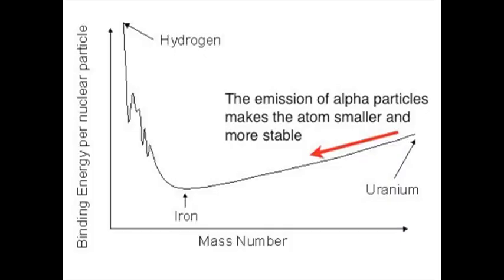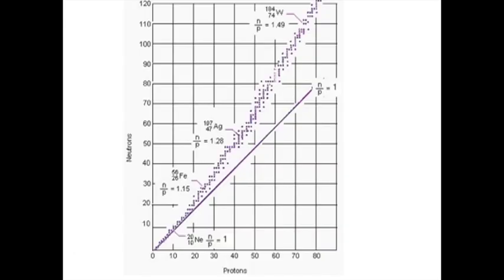One major factor affecting the stability of an atom is its size. Large atoms can emit particles to make themselves smaller. The other major factor in the stability of atomic nuclei is the ratio of neutrons to protons. The ideal ratio for stability follows a slightly curved and irregular line as shown by the dots on the graph. This ideal ratio increases as the atoms get bigger.